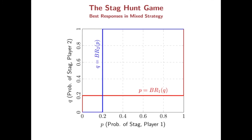Similarly, your opponent will have a best response as a function of your mixed strategy. So we have three crossing points, which are mutual best responses: two pure strategy equilibria and one mixed strategy equilibrium.